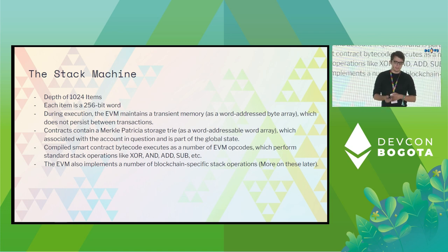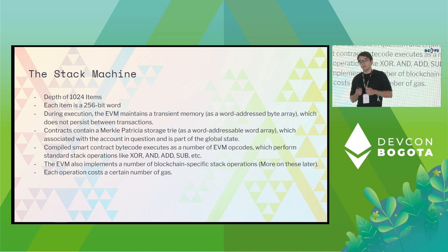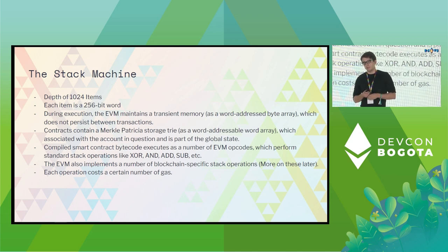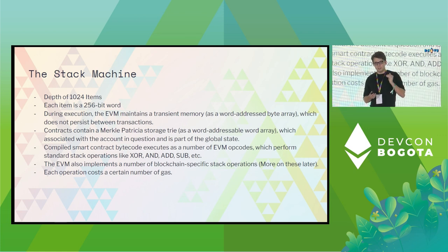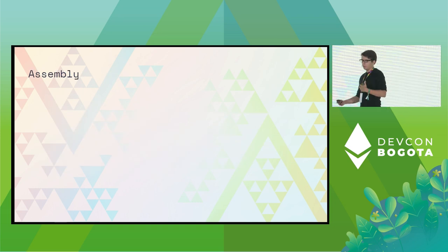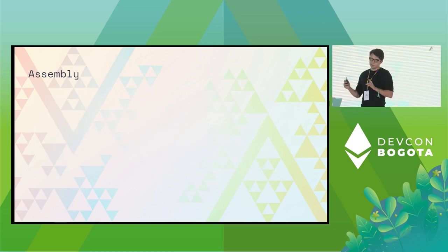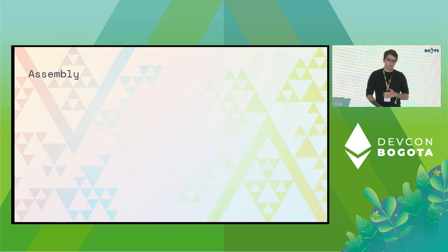When we pay gas for our transactions, we're essentially paying a little bit — or a lot — of gas for every single operation that the stack machine executes. Now that we have some understanding of what an EVM is, what is assembly?